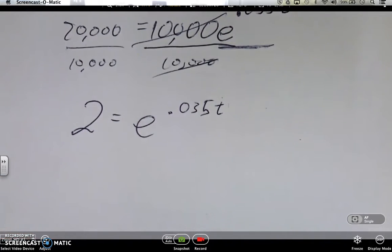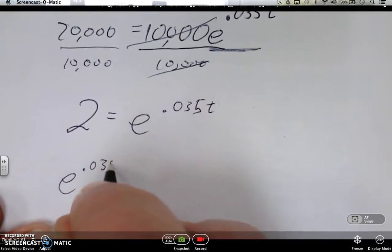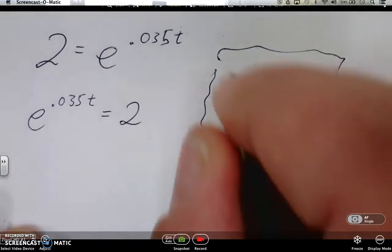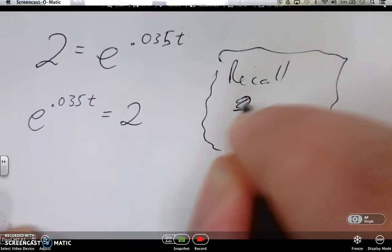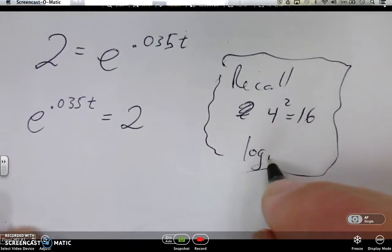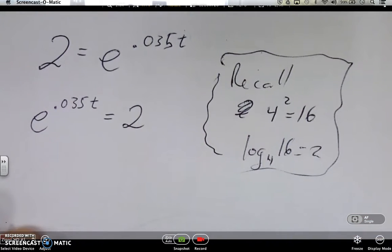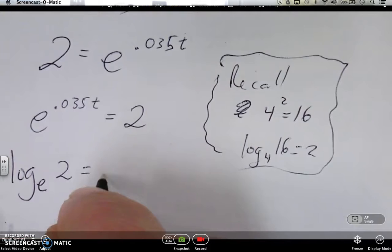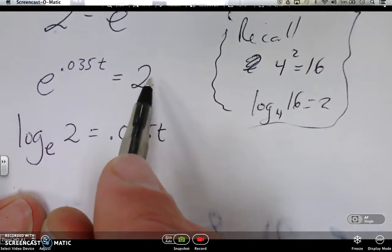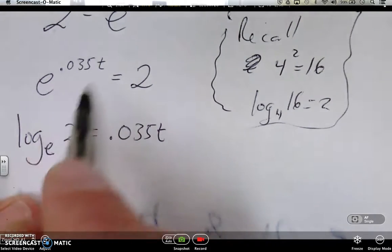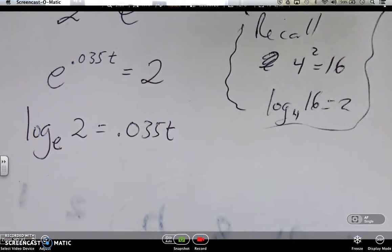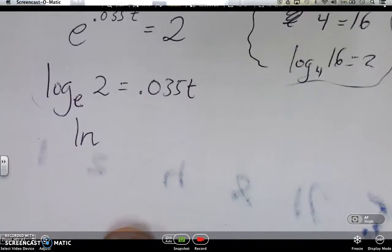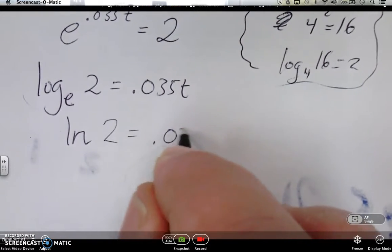Now we're going to change into log form. Before I do that, though, I kind of prefer, personally, I kind of prefer the e to be on this side. So over here, we're going to have to recall that if you had like, let's say it was like 4 to the 2 equals 16. In log form, that'd be log base 4 of 16 equals 2. So over here, same sort of thing. Log base e of 2 equals .035t. E is the base. 2 is what it's equal to. So we take log of 2 with base e. And the log's always equal to exponent. Now, what the heck do you do there? Well, I don't know log base e. My calculator does. In fact, the calculator knows this part as ln. Log base e is the same as ln. So ln of 2 equals .035t.